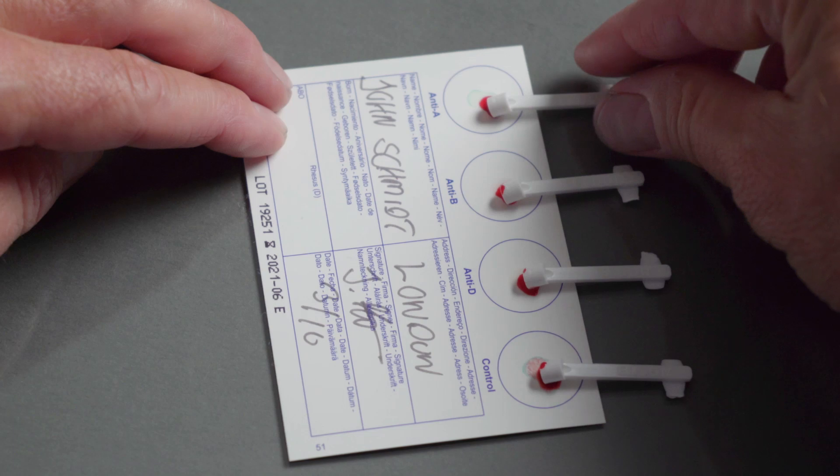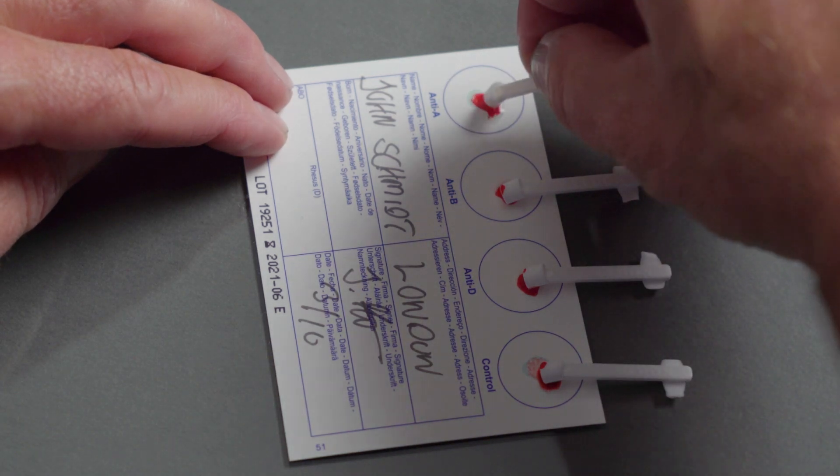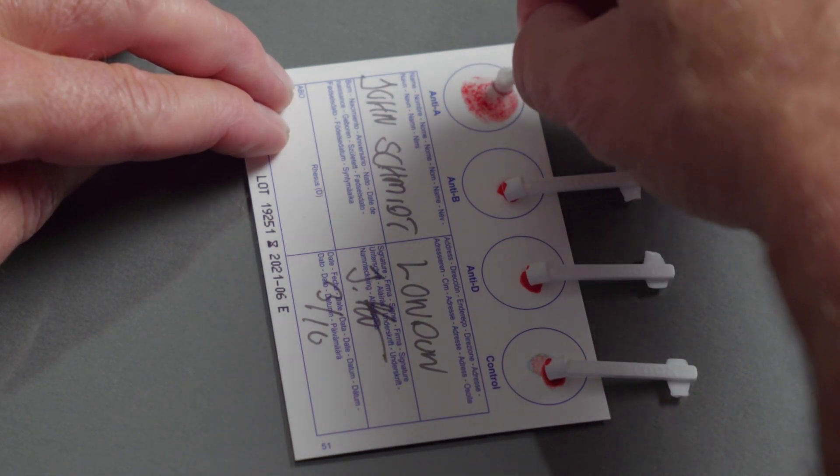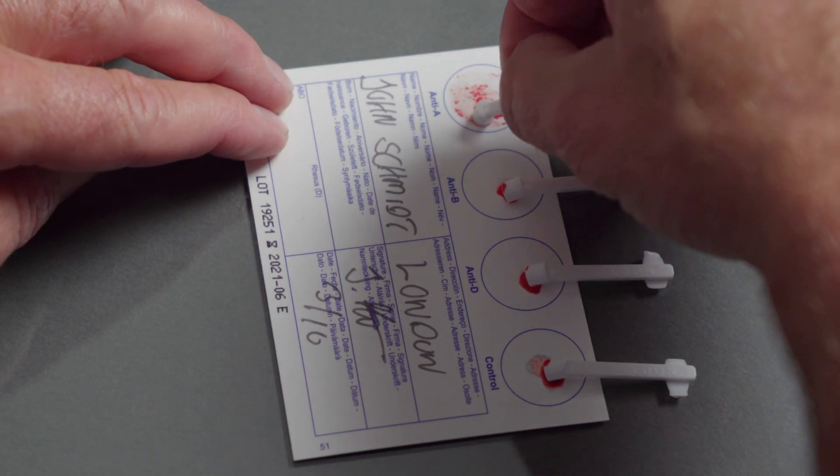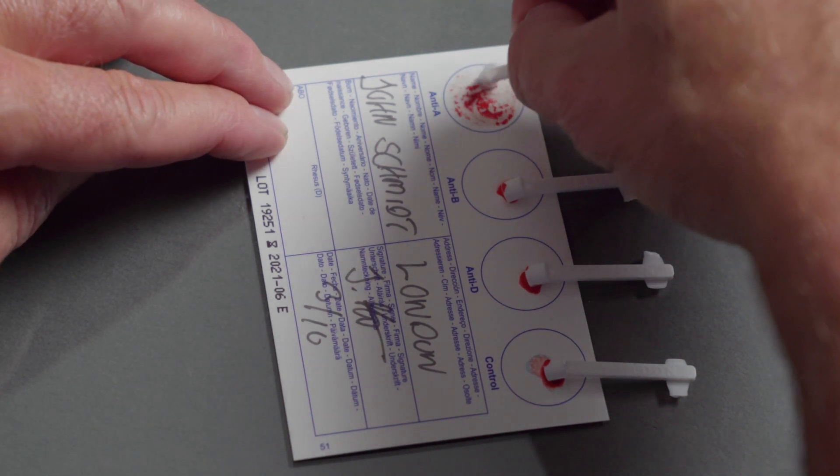Stir each circle with its proper Elden stick for ten seconds. Spread the mixture of blood, water and reagent carefully within the entire reagent circle. Take care to avoid mixing between circles.